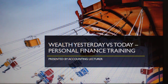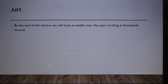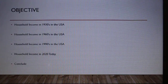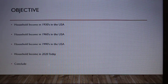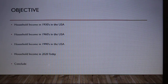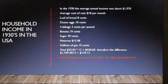Welcome to another session of personal finance training. Today we'll be looking at wealth yesterday versus today, presented by an accounting lecturer. By the end of the session, we'll look at wealth over the years in terms of household income, starting in the 1930s and incrementing by 30 years — covering the 1930s, 1960s, 1990s, and 2020s — and then we'll conclude.